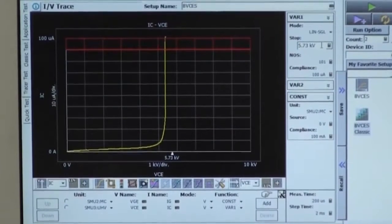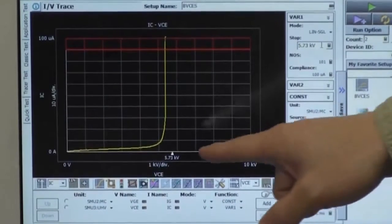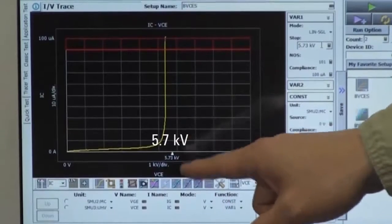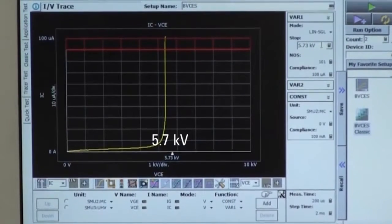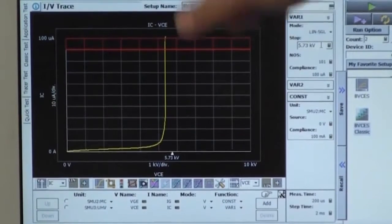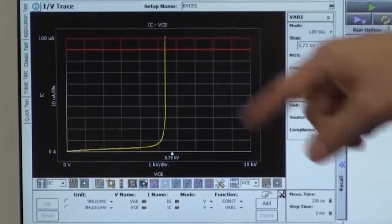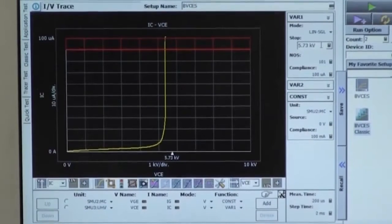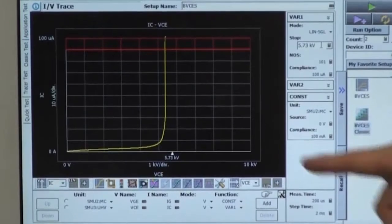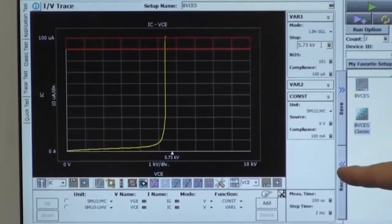Okay, so device is broken around 5.7 kV. Of course, you can read out the breakdown voltage from this tracer test mode graph. But B1505A has a unique function to extract breakdown voltage automatically.